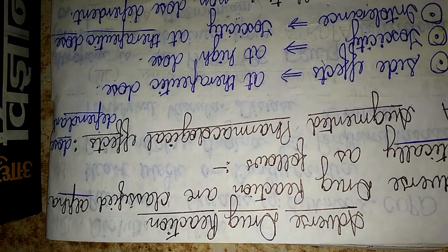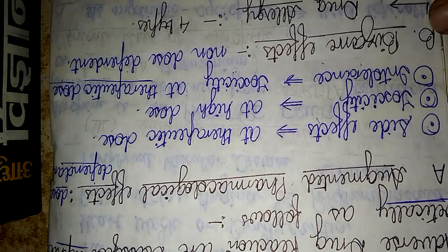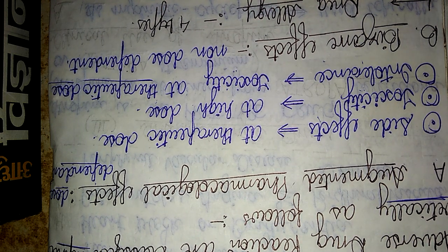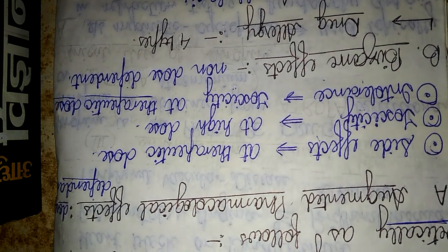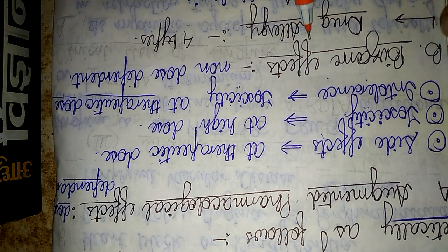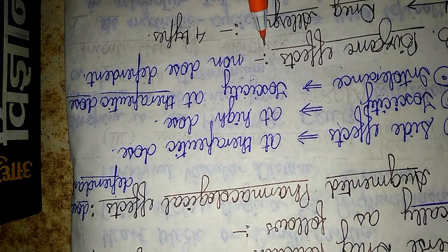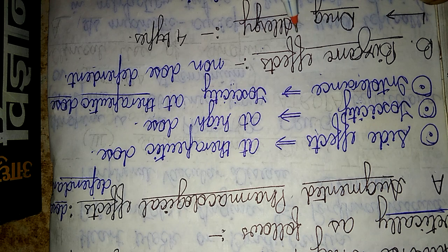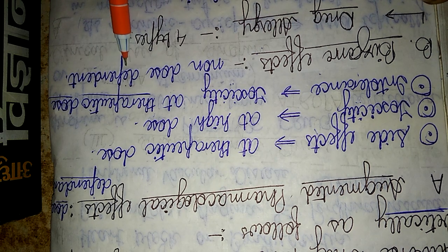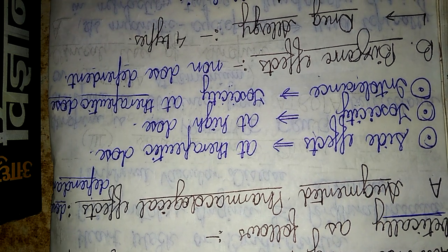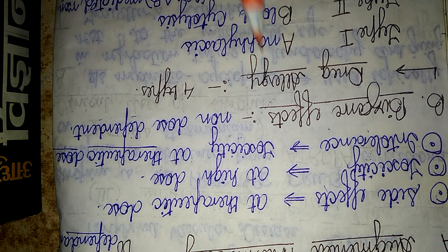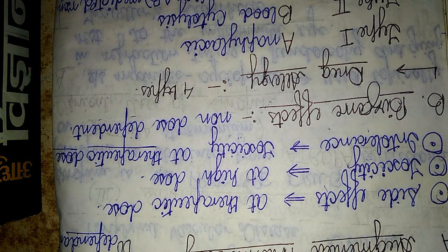The second adverse drug reaction — 'B' — refers to the bizarre effects. Bizarre effects are something unusual or unpredictable. These are non-dose dependent. Bizarre effects can be broadly categorized into drug allergies, which are classified into four types.